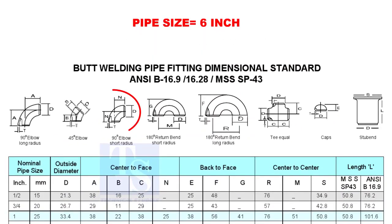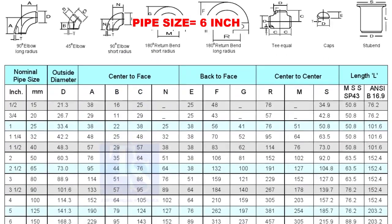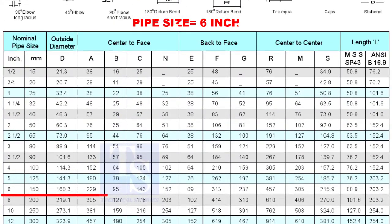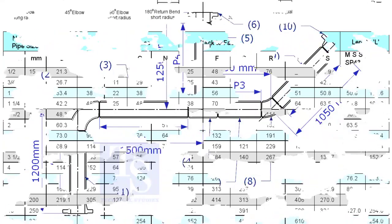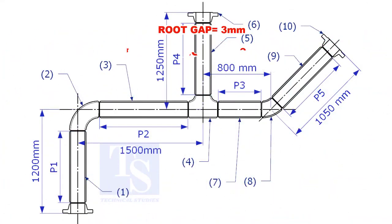Check the takeoff length of the elbow. It is 229 millimeters. Assume the root gap is 3 millimeters.